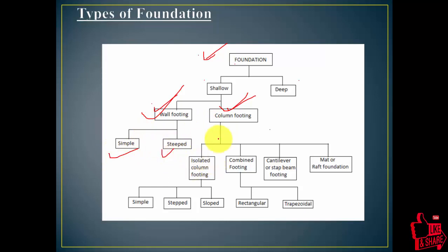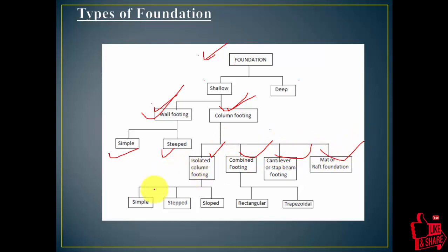Column footing includes isolated footing, combined footing, cantilever, mat, or raft foundation. Isolated footing has different types: simply, stepped, sloped, and combined — rectangular and trapezoidal. You can refer to the PPT slides in the description box for the detailed diagrams.